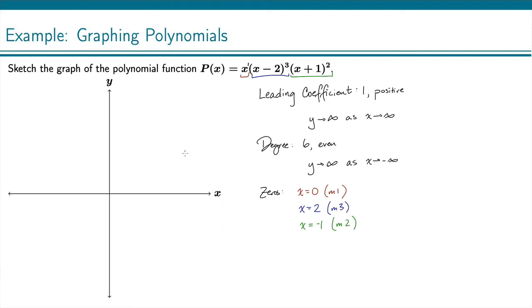So I am ready to draw this. We start by drawing our end behavior, which is just that we're going up on both sides. So I know I'm going to be going up on the right, and I'm going to be going up on the left.